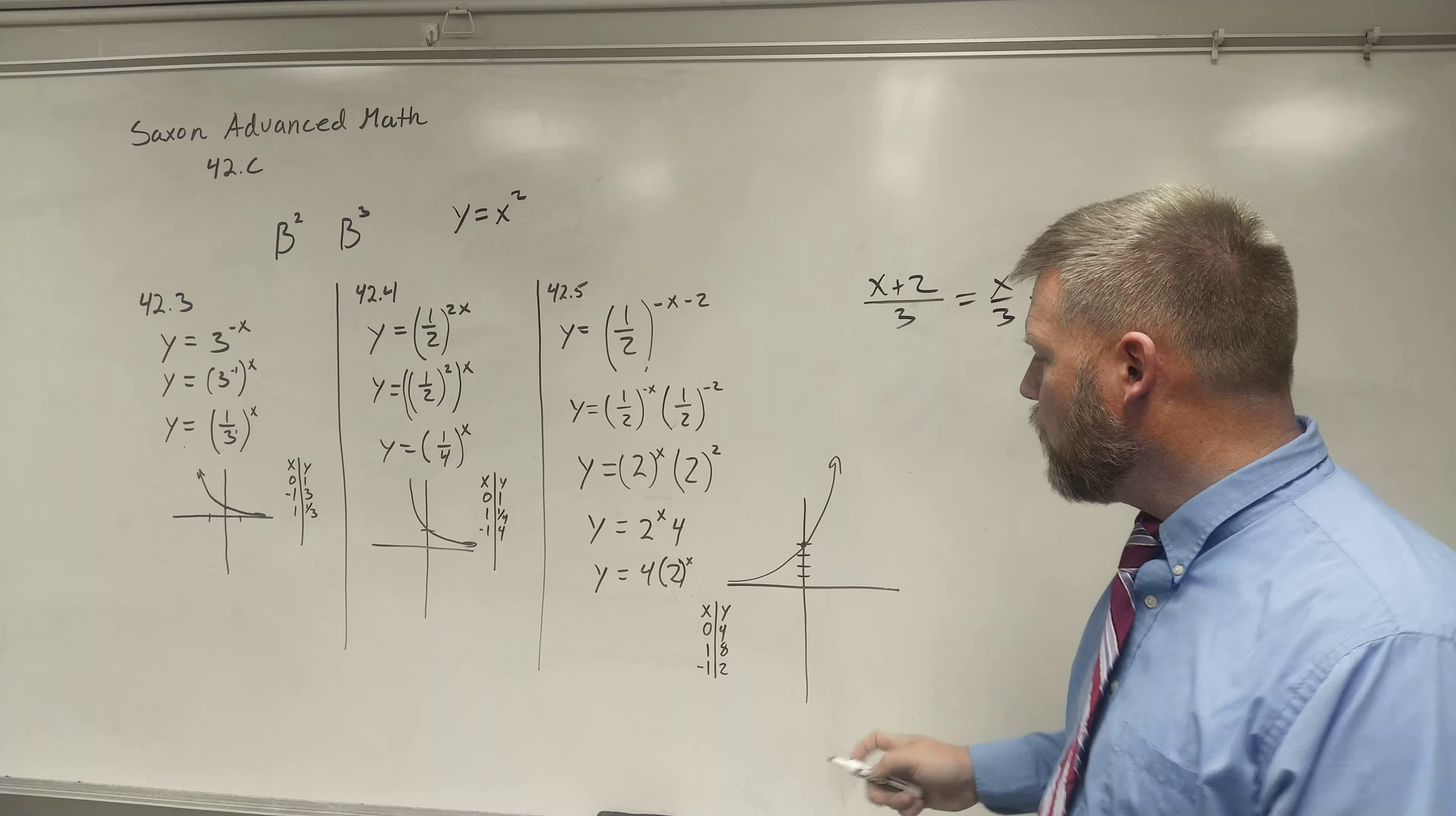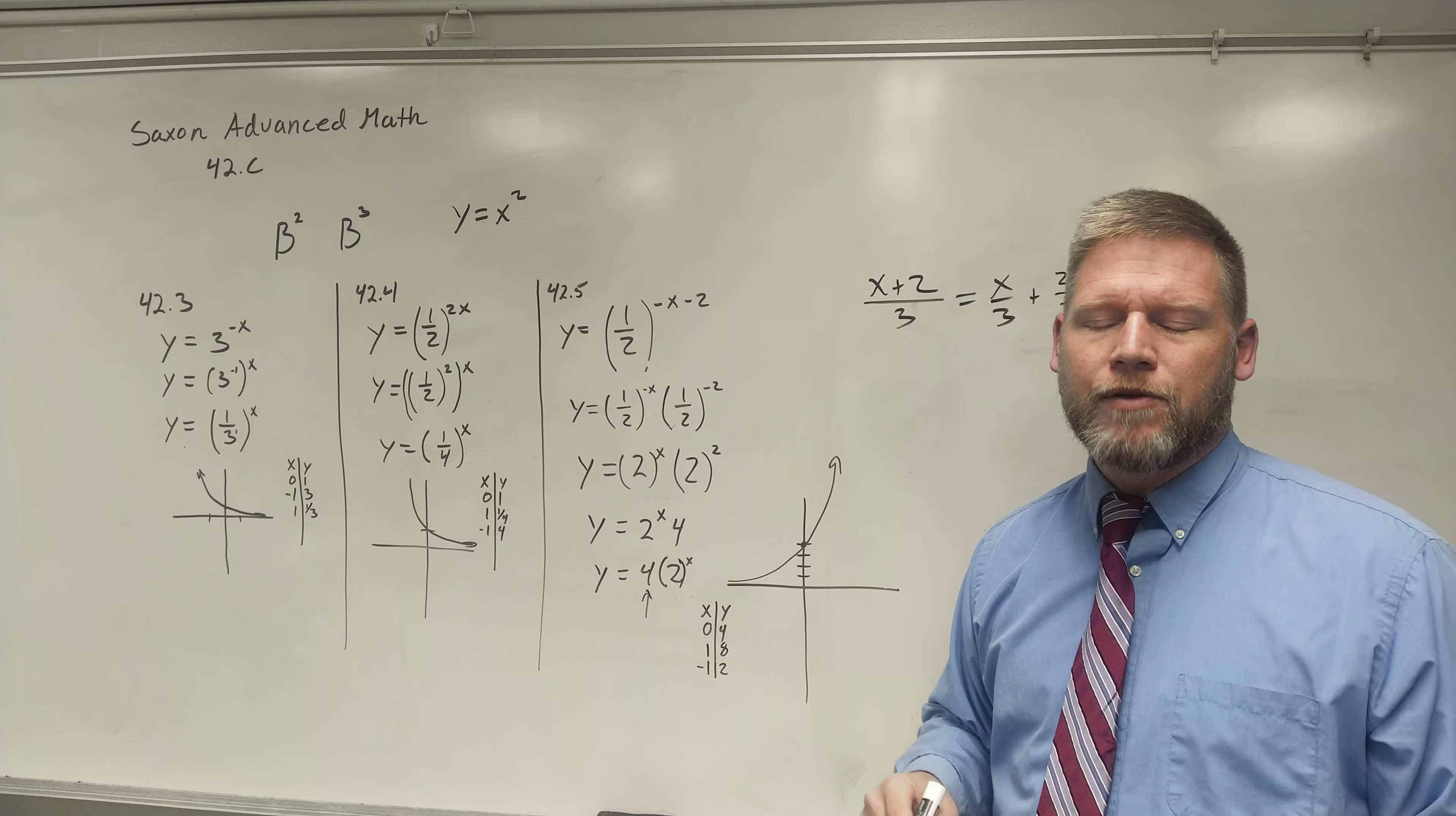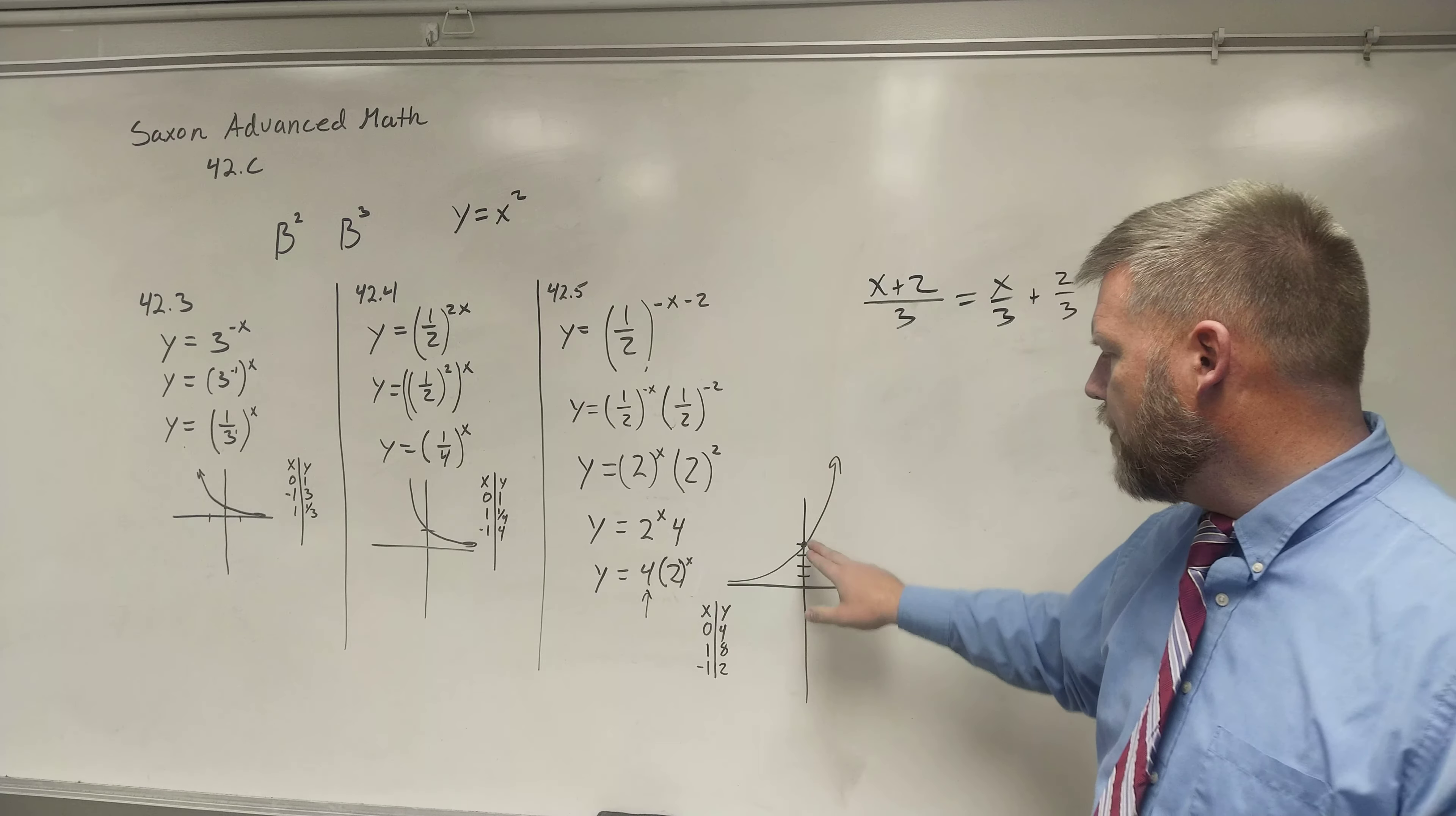Now, the only way that works is when this number right here, the coefficient to my constant number, is not a value of 1. Every other problem we've had, that has been a value of 1. And that's why that crossed at that y-intercept of 1. But this one does not. This has a different intercept value because of this 4 right here. So I know where that is.